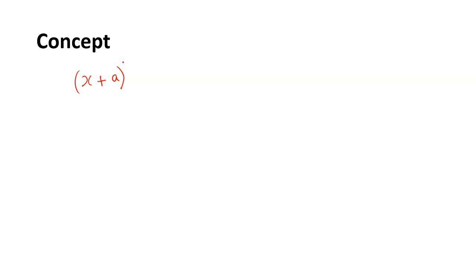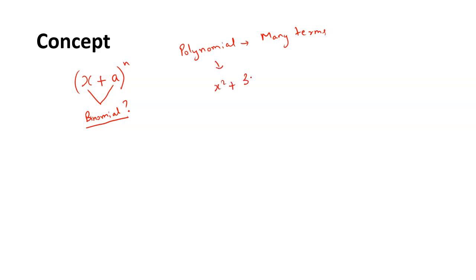So first of all, let's see what a binomial is. Binomial theorem is something that gives us the expansion of (x + a) to the power n. This has two terms, and that is why this is called binomial. So when a binomial is raised to a power n, its expansion is given to us by the binomial theorem.